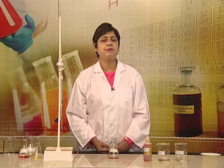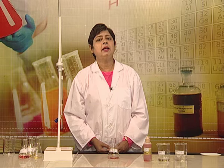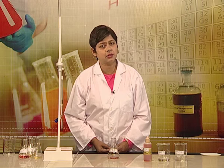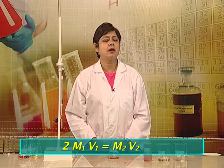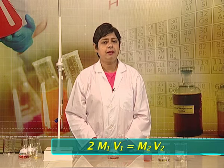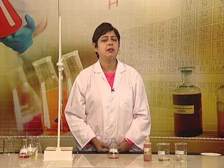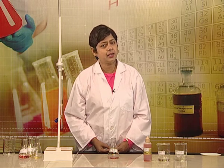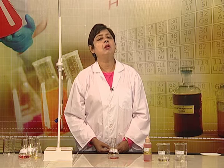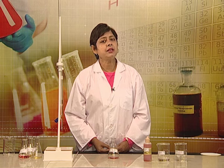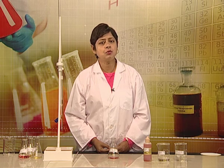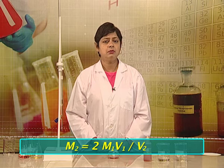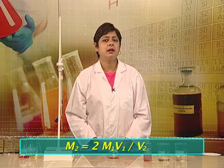Observations and calculations for this experiment. Remember that the molarities and the volumes of sodium carbonate and hydrochloric acid solution are related as 2M₁V₁ = M₂V₂, where M₁ is molarity of sodium carbonate, V₁ is volume of sodium carbonate, M₂ is molarity of hydrochloric acid solution, and V₂ is volume of hydrochloric acid solution. We can rearrange the equation to get M₂, the molarity of hydrochloric acid, as M₂ = 2M₁V₁ / V₂.